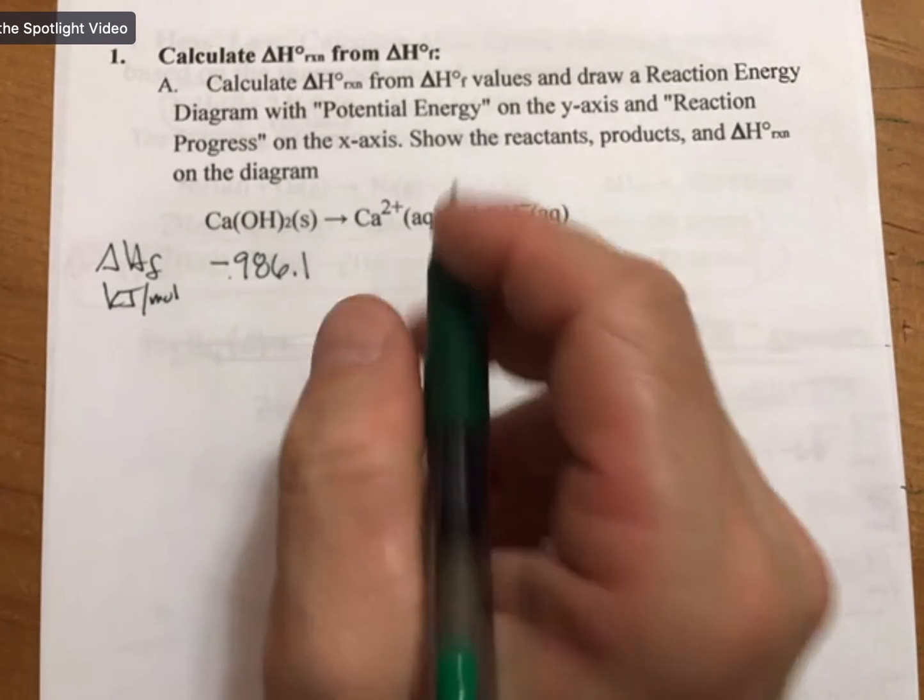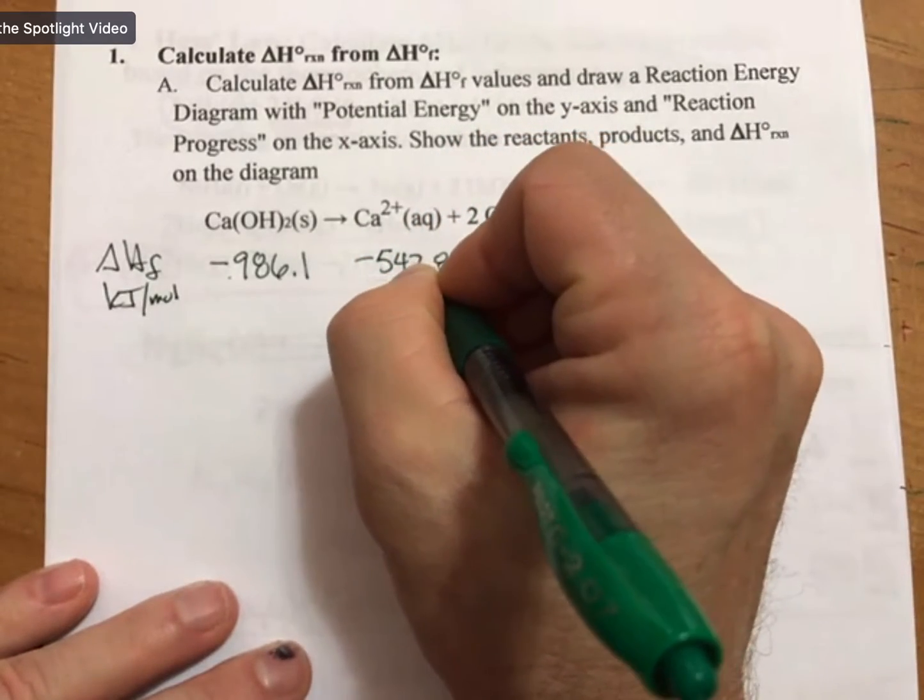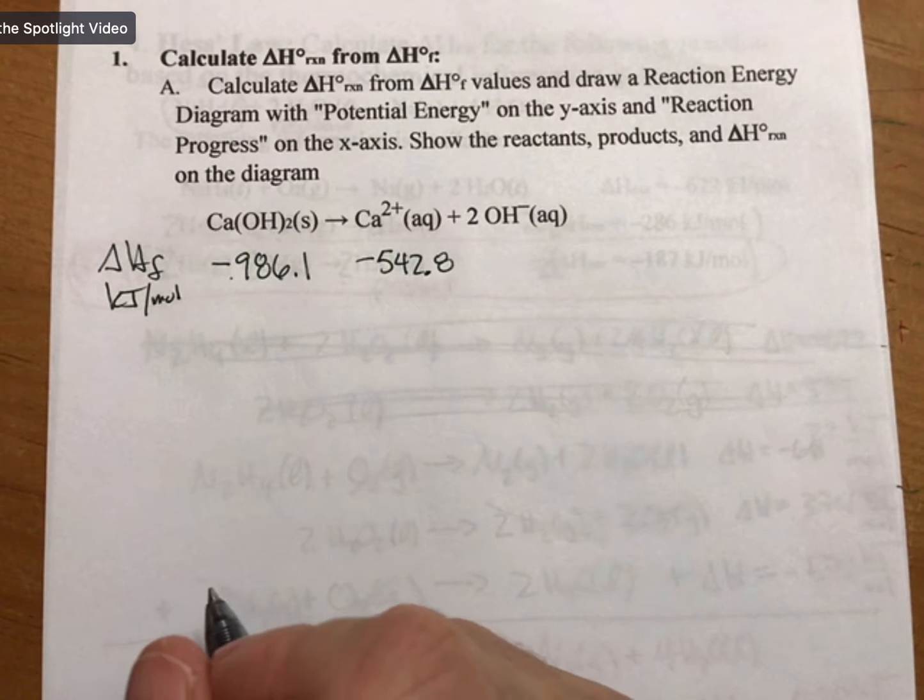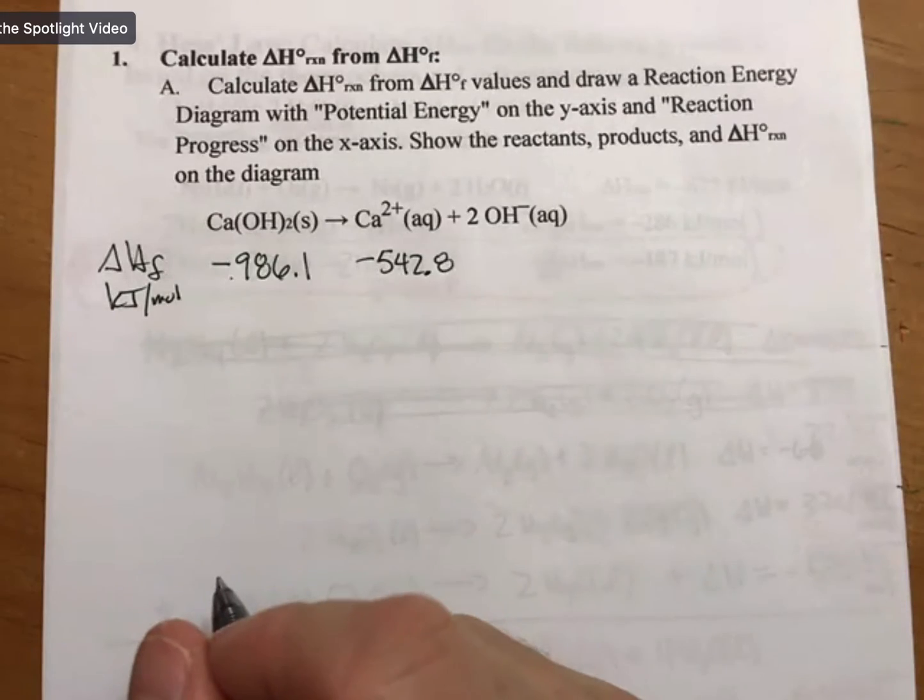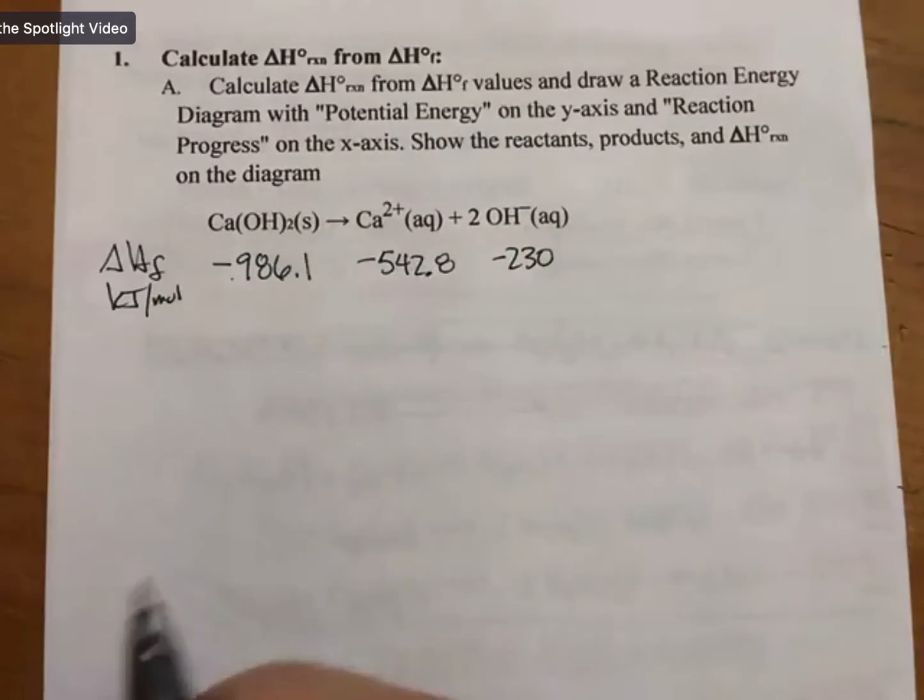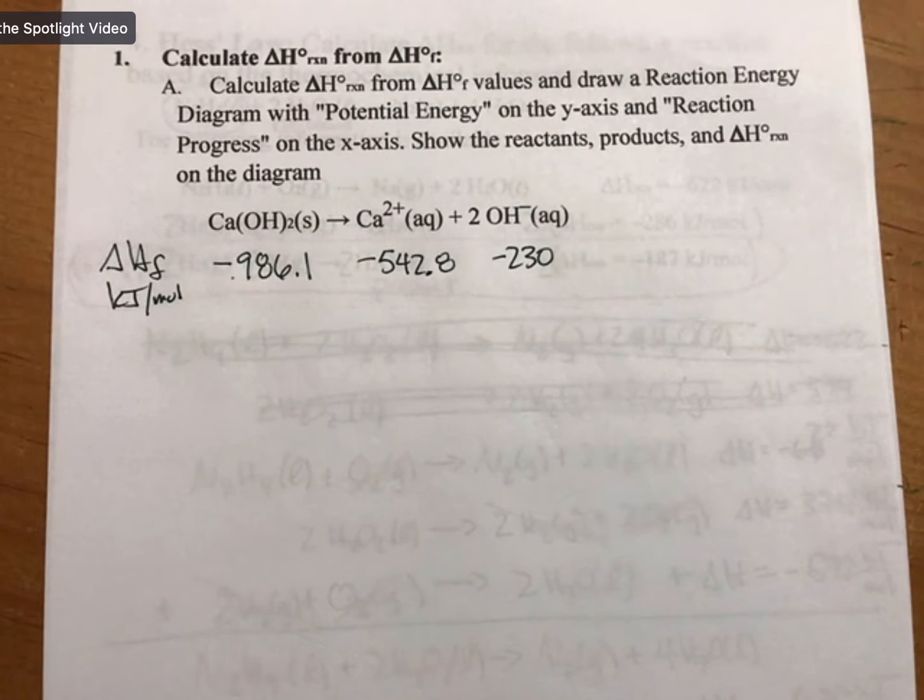And hydroxide aqueous is -230. You have -229? Yeah, all right.